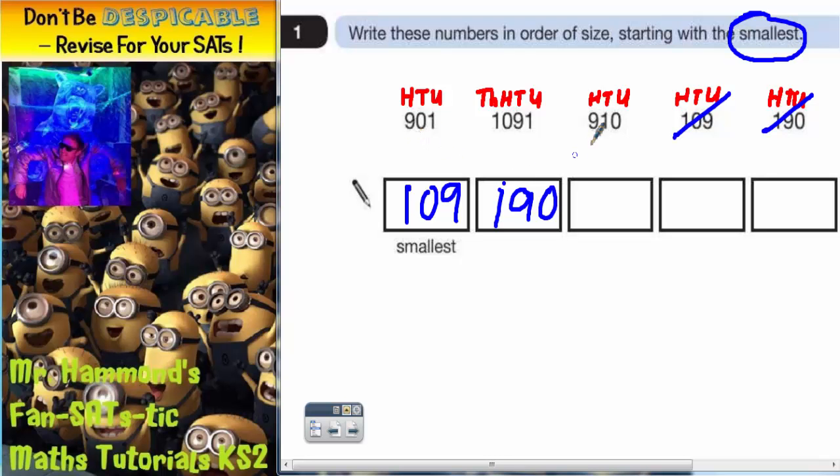Now we're looking at the hundreds again. So these two have both got 900 in them. So we've got 901, 910. So 901 is the next smallest, followed by 910.